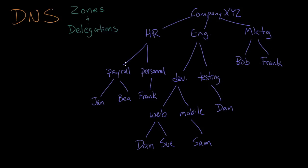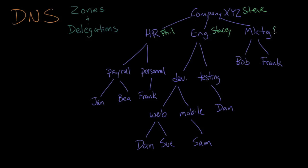HR is a little bit bigger, so it is subdivided into payroll and personnel, each of which has a couple of people in it. Engineering is the biggest division of all, divided up into development and testing. Testing has one person in it, but development is broken up into the web and mobile departments, each with a couple of people. This company is headed up by a CEO — let's say his name is Steve. HR is headed up by Phil, engineering is Stacy, and marketing is Chris.